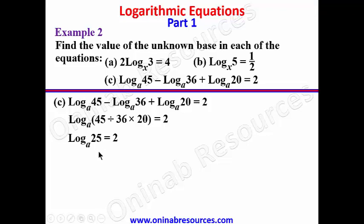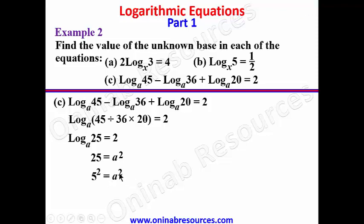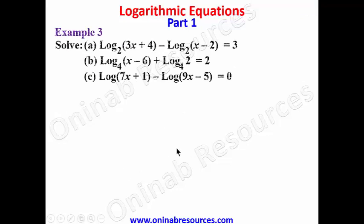Applying the relationship between indices and logarithm, 25 equals a to the power of 2. Since 25 is 5 squared, we have 5 squared equals a squared. The indices are equal, so the bases are equal, giving us a equals 5. That is the end of example 2.